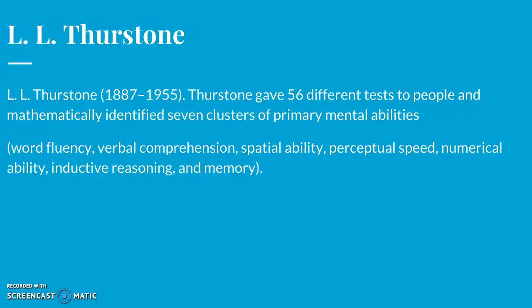Thurston didn't rank people on a single scale like the G value. But when other investigators studied his test profiles, they detected a persistent tendency — those who excelled in one cluster generally scored well on the others, suggesting some evidence of a G factor. We might liken mental abilities to physical abilities: athleticism is not one thing but many, yet good things tend to come packaged together, just as distinct abilities tend to cluster and correlate enough to define a small general intelligence factor.